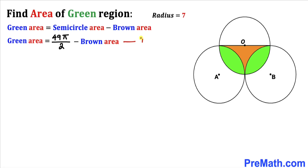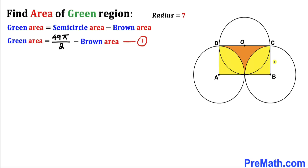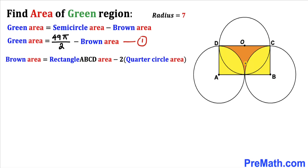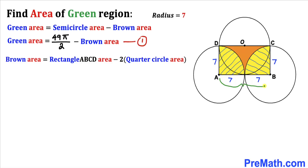Let's call this equation number one. Now our task is to calculate the area of this brown shaded region. We form rectangle ABCD by connecting the centers A and B with points C and D. The brown shaded area equals the area of rectangle ABCD minus the area of these two quarter circles. Each radius is seven units, so the sides are seven and seven, making distance AB equal to 14 units.